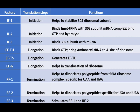The releasing factors, even these are three in number. Releasing factor 1 helps to dissociate the polypeptide from the tRNA ribosome complex, specific for UAA and UAG stop codons. Releasing factor 2 helps to dissociate the polypeptide and is specific for UAA and UGA. And releasing factor 3 stimulates both releasing factor 1 and releasing factor 2.